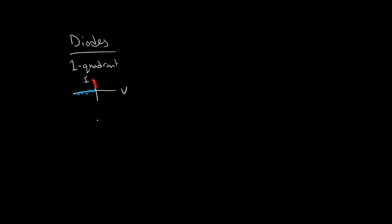If you draw the diode like this, define this as the current ID and this as the voltage VD, they're a one-quadrant device. And you can flip them around to get the opposite quadrant — the kitty-corner, let's say.